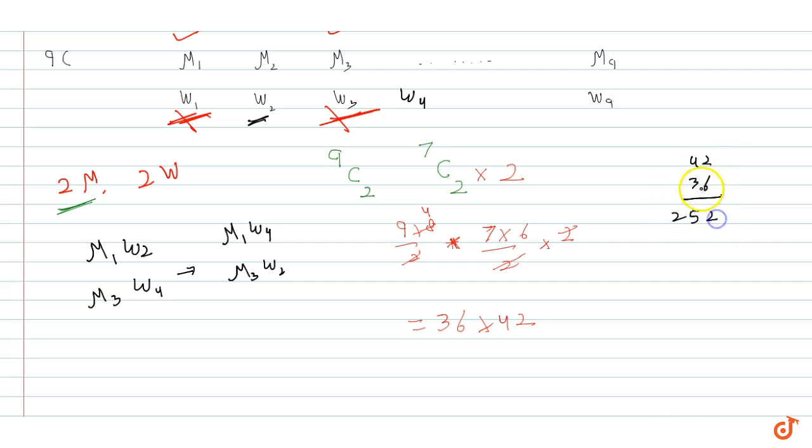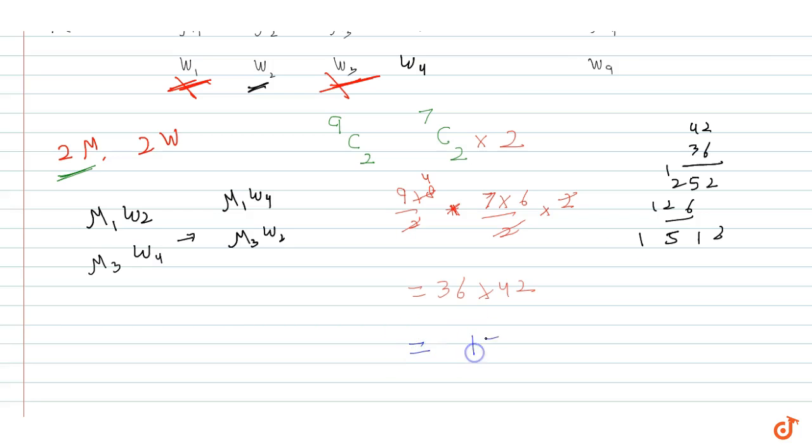252 plus... 42 times 3 is 126... that's 1512. So the total number of possible games is 1512. This is the answer to this question.